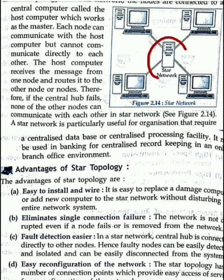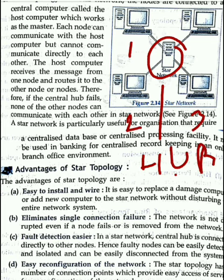If this is a normal hub — not an intelligent hub — what does it do? If node 1 sends data, it sends it to the hub, and the hub sends it to nodes 2, 3, and 4. Each one will check the address. But if it is a repeater — the intelligent hub — it will detect the address and send the data packet only to the correct node.